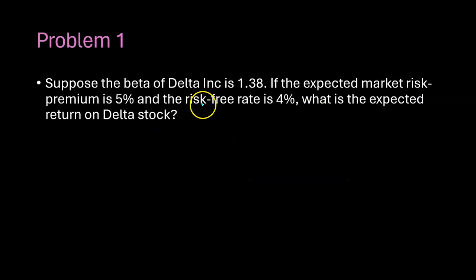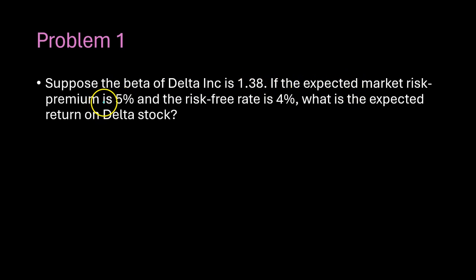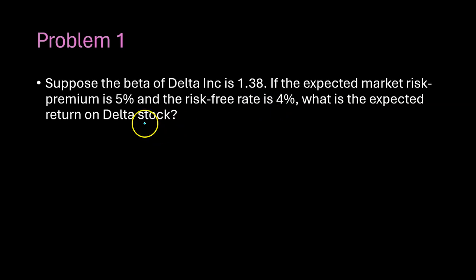Suppose the beta of Delta Incorporated is 1.38. This is a measure of Delta's risk, more specifically its systematic risk. If the expected market risk premium is 5% — in other words, this is what investors are expecting to earn over and above the risk-free rate by investing in a diversified portfolio of different types of assets like the S&P 500 — and the risk-free rate is 4%, what is the expected return on Delta stock?